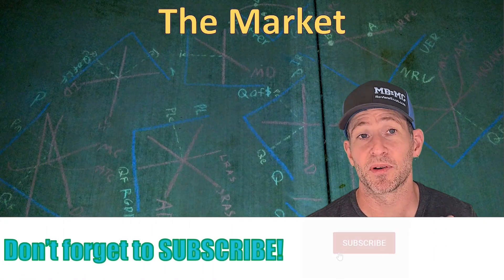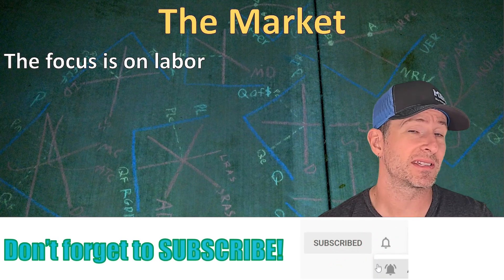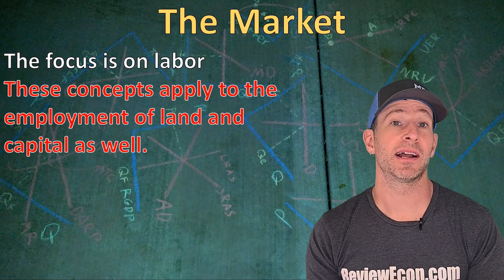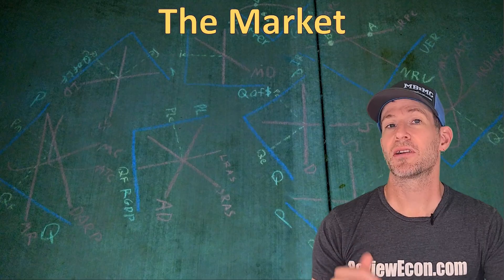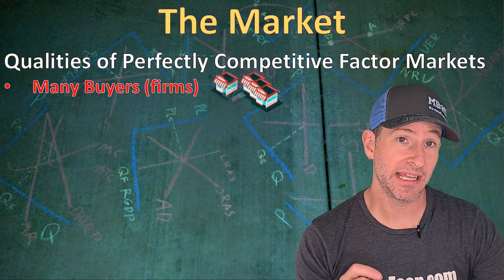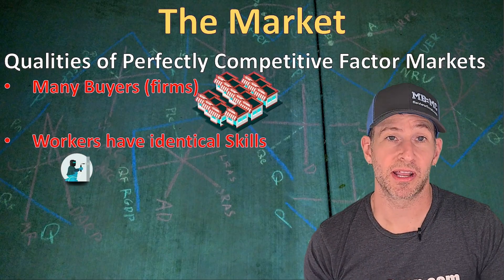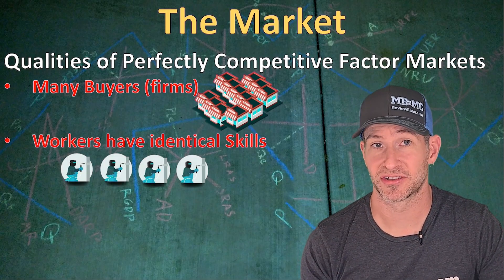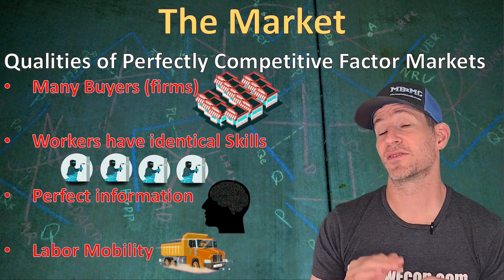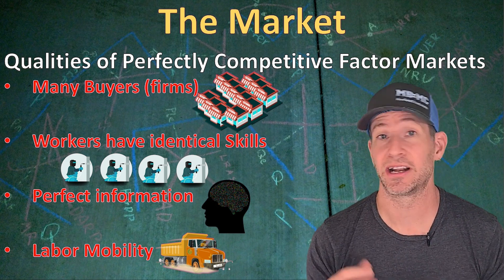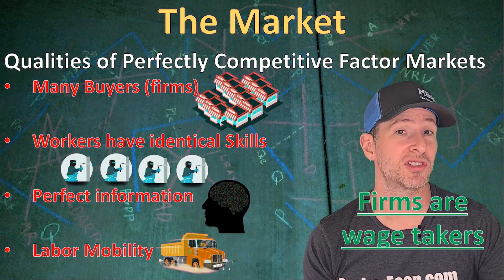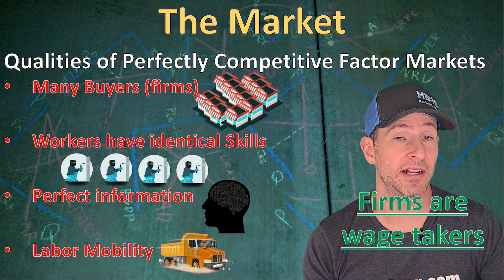Let's review the labor market. We're going to be focusing on labor, but this actually applies to other resources as well — these same concepts apply to the employment of physical capital and land. Here are some qualities of a perfectly competitive factor market. First, we're going to have many different businesses competing for labor. The workers are going to be identical as far as their skills are concerned. We also assume perfect information and labor mobility, meaning workers have knowledge of all their opportunities and can easily move from one to another. Because of these qualities, firms within a perfectly competitive factor market are going to be wage takers — they have no influence on the wage they pay their workers.